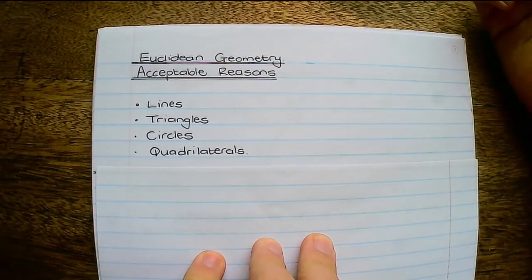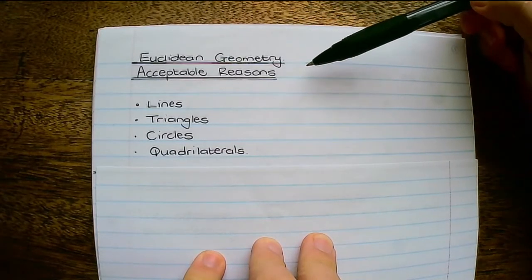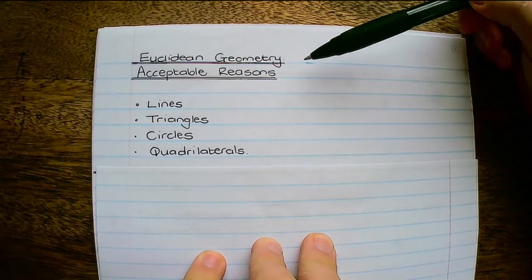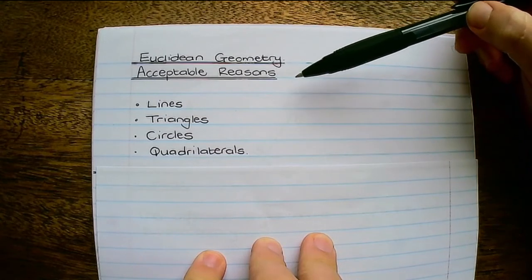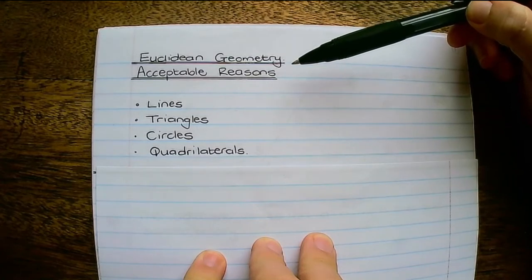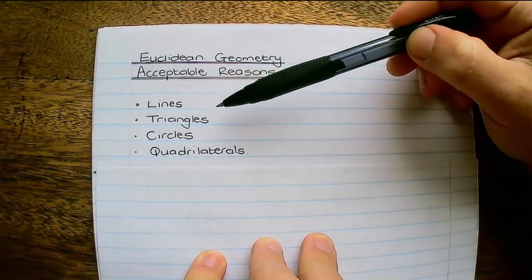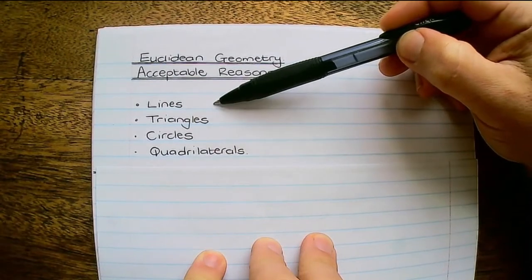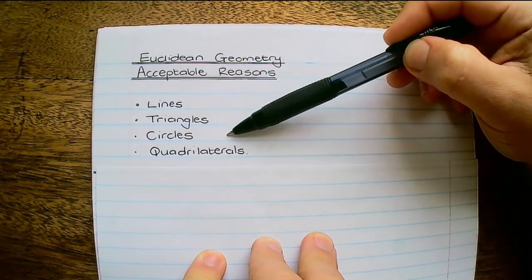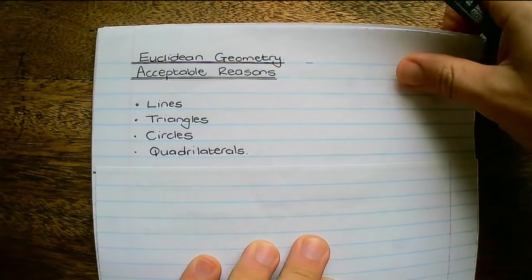Hello guys, welcome to our video on Euclidean geometry. Over the next few videos we'll speak about the acceptable reasons in geometry. When you solve a problem you need a statement and a reason, and we'll speak about the reasons in lines, triangles, circles and quadrilaterals. So let's get going.